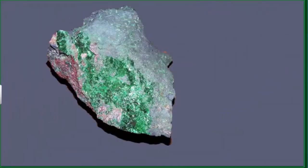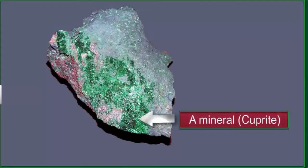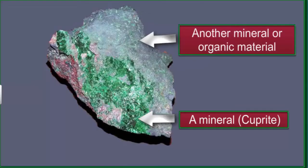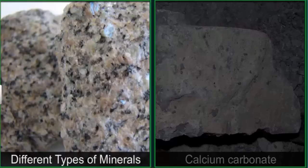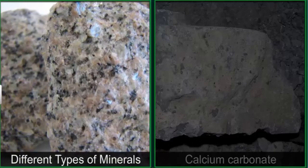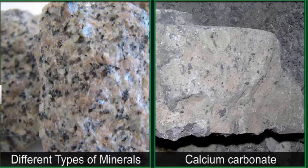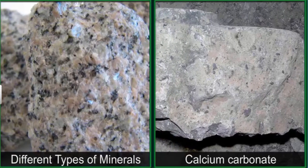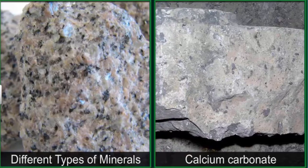Remember that rocks themselves are not minerals. Rocks contain minerals mixed with organic material. Here is a rock that contains the greenish mineral called cuprite, which is used to extract copper. If you pick up a piece of rock, chances are that it contains several different types of minerals. However, some rocks, like blocks of limestone, are made entirely of a single mineral called calcium carbonate.